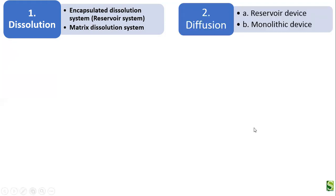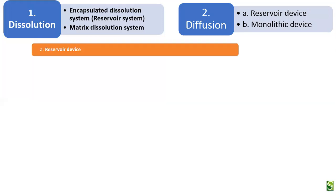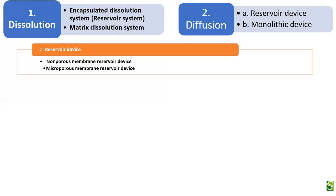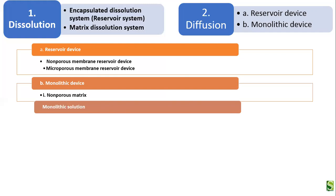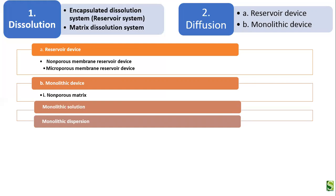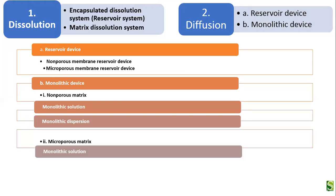The diffusion-based delivery system consists of two types: the reservoir device and the monolithic device. In the reservoir device, the drug is encapsulated in the polymer. In the monolithic device, the drug is dispersed in the matrix of polymer. The reservoir device can be of two types: non-porous membrane reservoir device and microporous membrane reservoir device. The monolithic device can be a non-porous matrix involving monolithic solution or monolithic dispersion, whereas the microporous matrix may contain monolithic solution or monolithic dispersion.